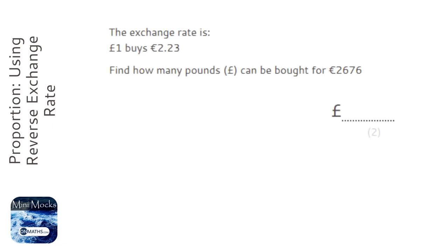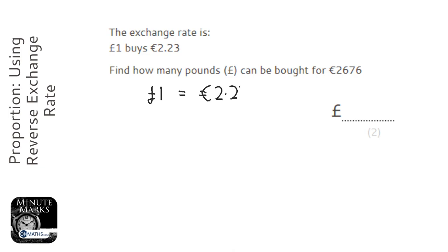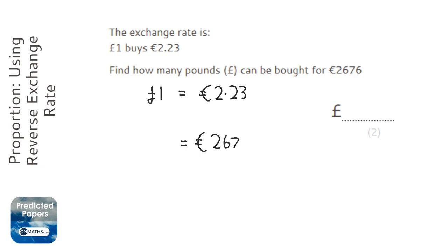There are quite a few different ways of doing this question. One way I'm going to show you now: the fact that £1 equals 2.23 euros, and we need to get it equal to 2,676.